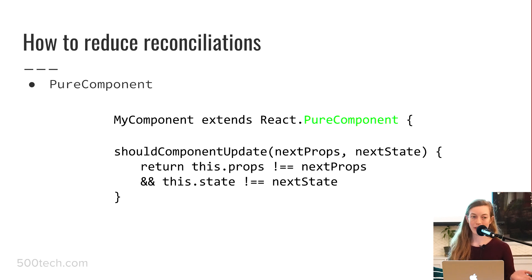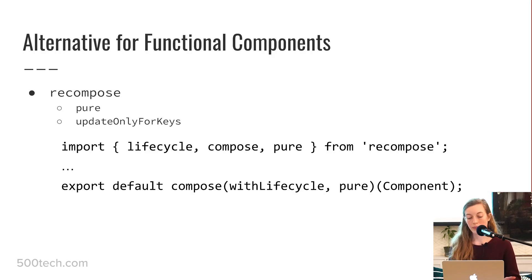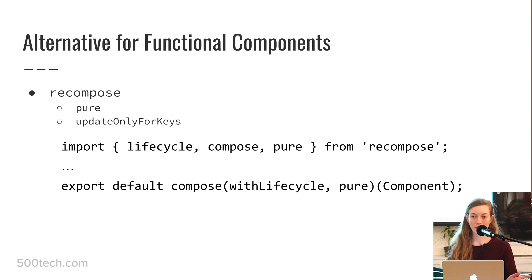If you don't want to convert functional components to class components just to get this lifecycle method, recompose is an option. It has methods like 'pure,' which makes your component pure, and 'onlyUpdateForKeys,' where you can specify which prop keys should trigger an update. There are other options if you really prefer functional components.